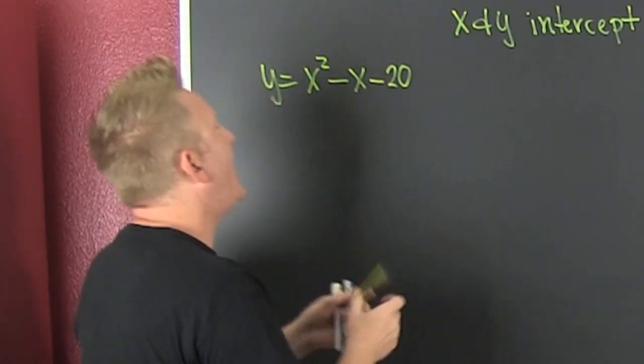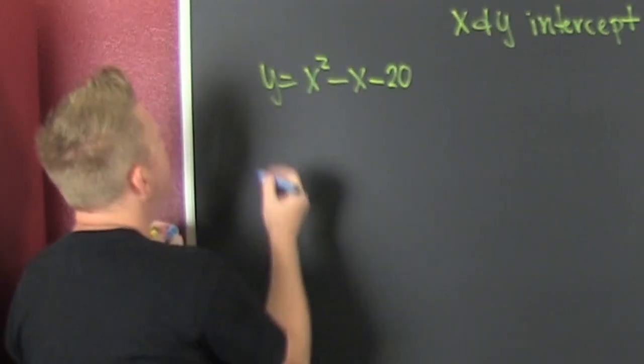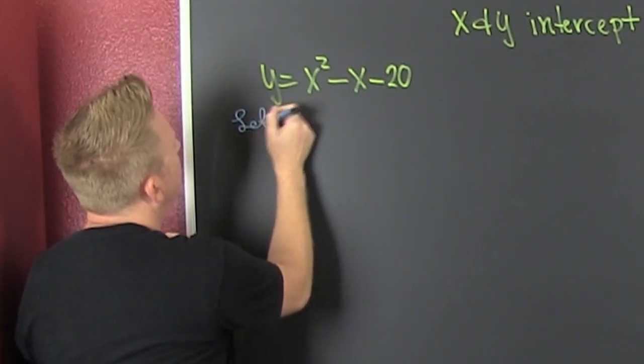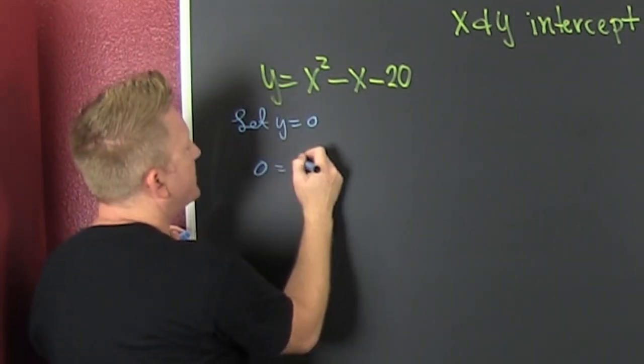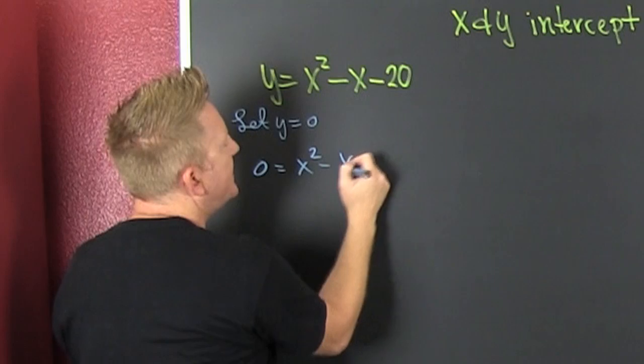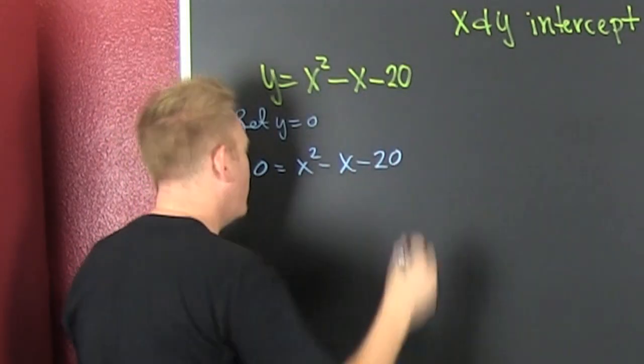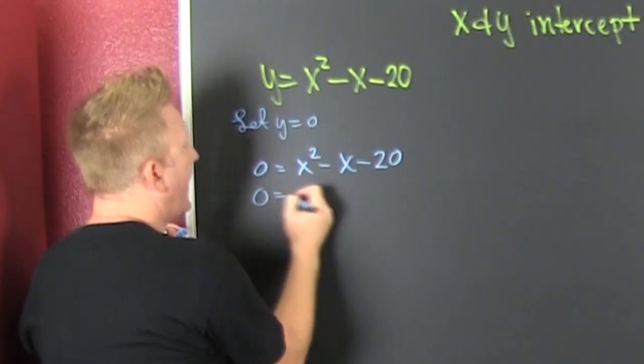So first, if we're going to get an x-intercept, we're going to let y be 0. So we let it... So then that's 0 is equal to x squared minus x minus 20. Then what? Teach me how to factor. I tried!